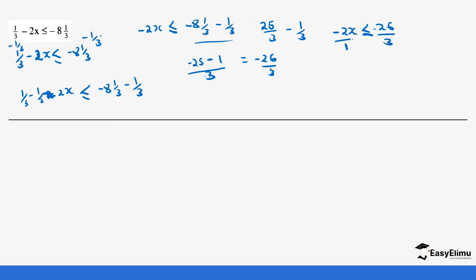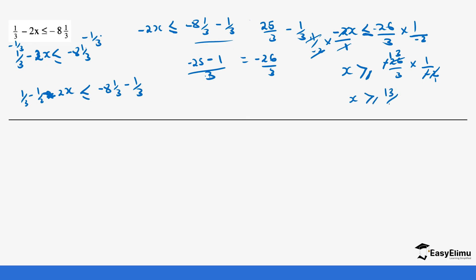So minus 2x is less than or equal to negative 26 over 3. We multiply both sides by 1 over negative 2. The negative 2 cancels and 1 cancels, so x becomes greater than or equal to — we changed the sign because we multiplied by the reciprocal of negative 2. So we have negative 26 over 3 times 1 over negative 2. The negatives cancel and 2 divides into 26 giving 13, so x is greater than or equal to 13 over 3. Remember that 13 divided by 3 gives us 4.3, so make sure your number line includes 4.3.